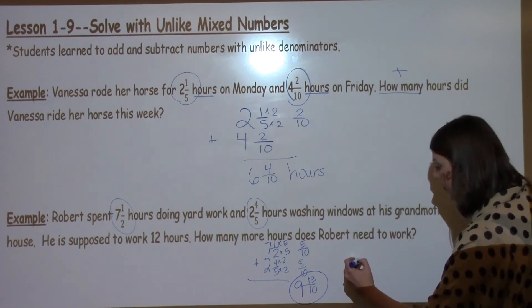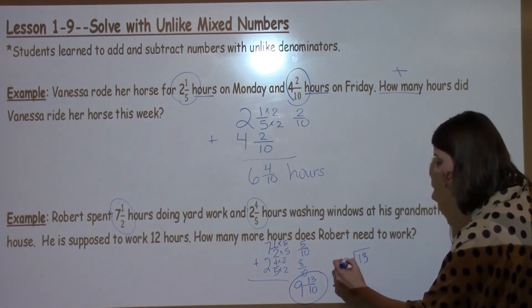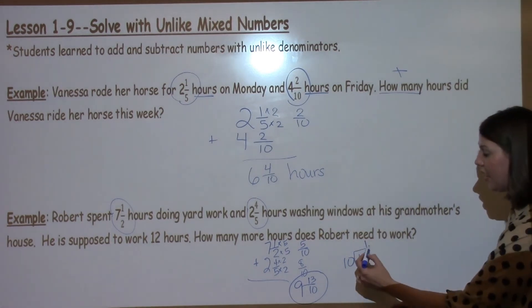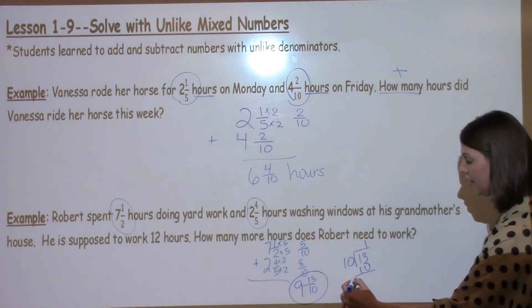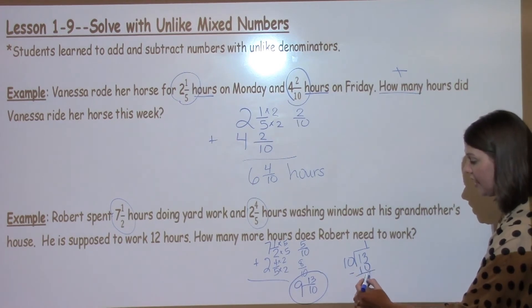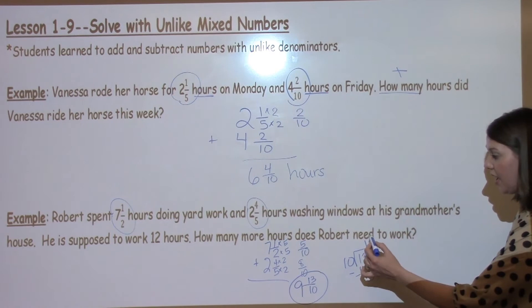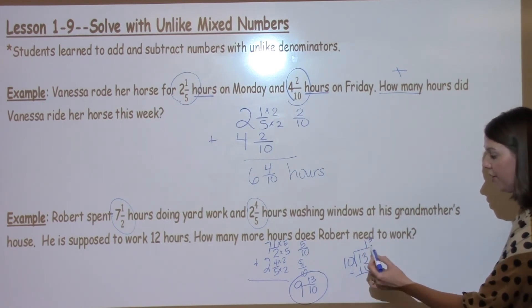So I need to take 13 divided by 10. 10 can go into 13 one time. 1 times 10 is 10. When I subtract 13 minus 10, I get 3. Nothing left to bring down, so this becomes my remainder in my numerator, my 3, and then my 10 is for my divisor.